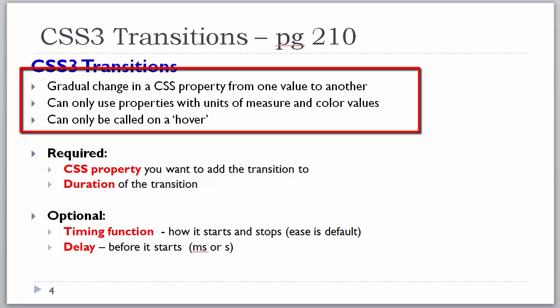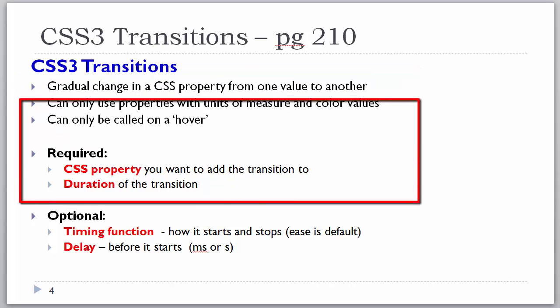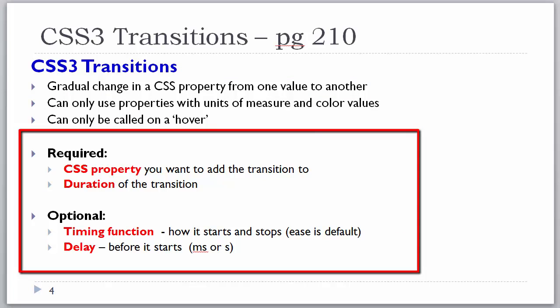The syntax for CSS3 transitions is very similar. You need the property that will be added to the transition and you need the duration that the transition will occur over — a time factor in either seconds or milliseconds. There are 1000 milliseconds in a second. Optionally, you can specify a timing function, which basically says how it starts and stops. The default timing function is ease. You can also specify a delay before the animation starts; the default is none.